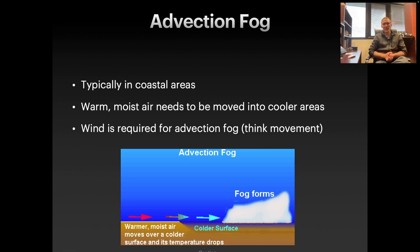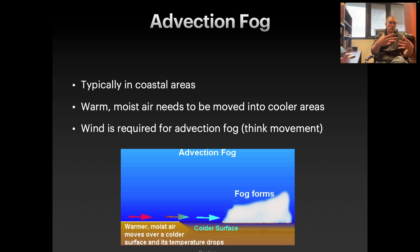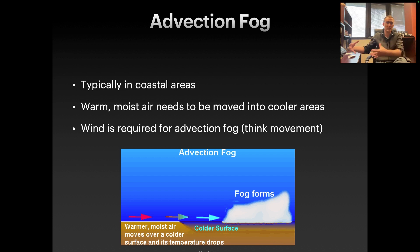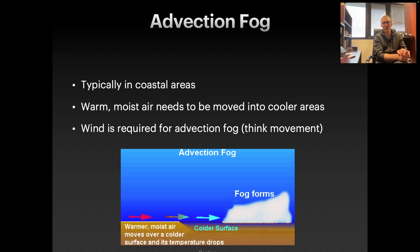Advection fog is typically going to be in coastal areas or areas where warm, moist air has the ability to move into cooler areas. Wind is required for this, so think movement. Advection — for those of you in science — is often associated with the movement of material. So advection means movement. This is warm, moist air that gets advected or moved from somewhere warmer to a cooler surface, and that results in fog forming.